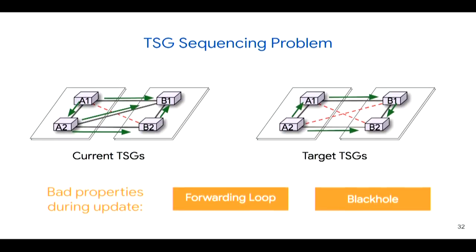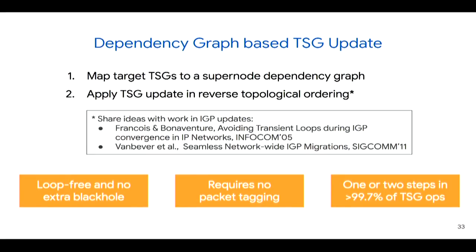Without tunneling for super node-level TE, updating TSG can also cause transient loops and black holes. The standard approach to solve this in SDN—consistent update, as presented this morning by Jen Rexford—relies on packet tagging or versioning to enable safe network updates from current state to target state. However, adding extra layers of encapsulation caused hashing problems and is not a feasible option for B4. Our solution shares the same idea as prior work on loop-free updates by modeling the TSG update problem using the super node dependency graph, and by updating super nodes based on reverse topological ordering of the dependency graph, we achieve loop-free updates using only one or two steps in the majority of cases without requiring packet tagging.